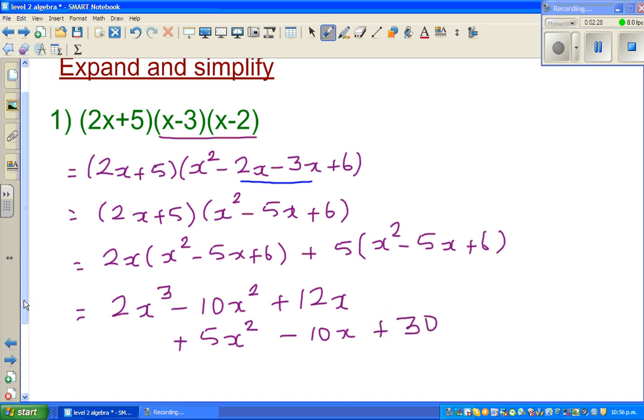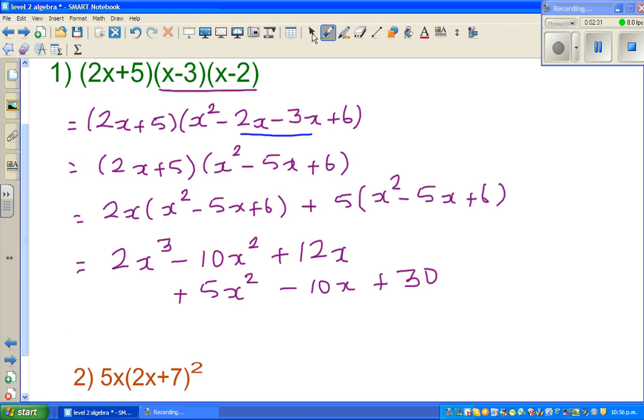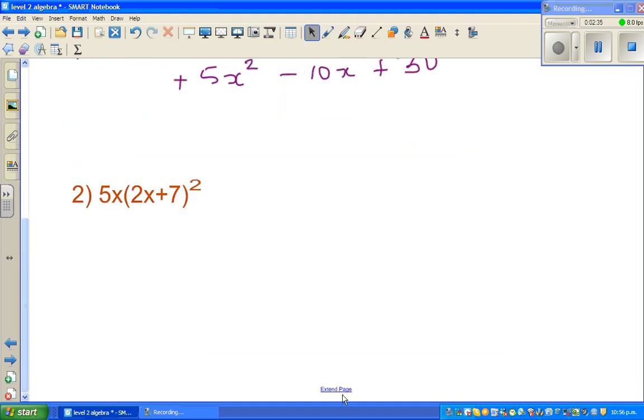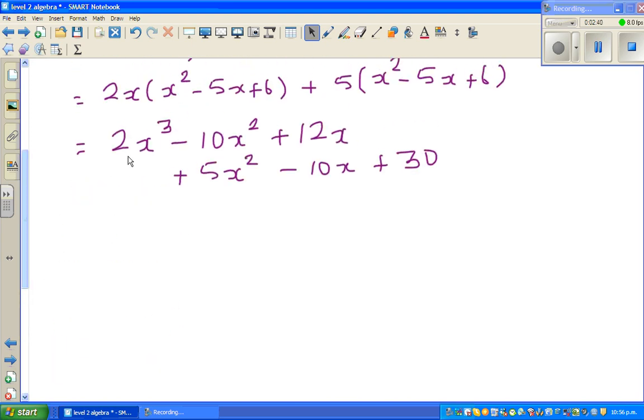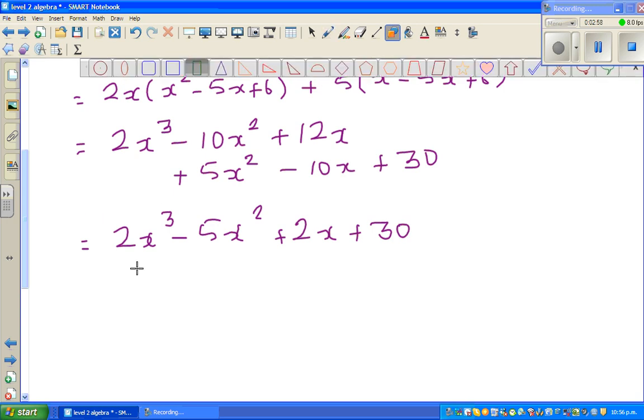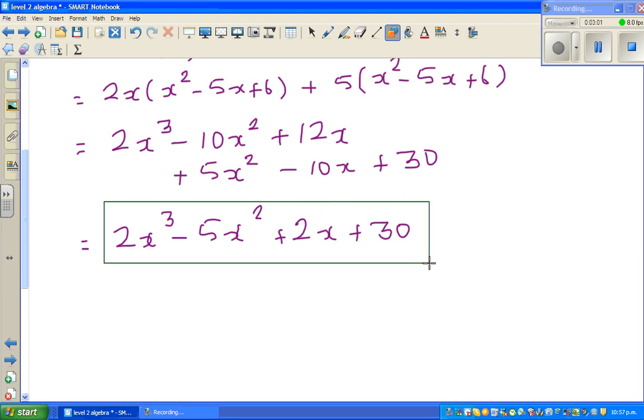So I have lined up the like terms. This is equal to 2x cubed minus 5x squared plus 2x plus 30. You have to be very careful with the signs. And this is your answer. As always, I like to check my answer.